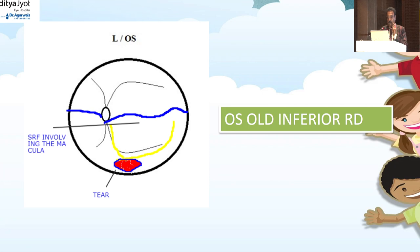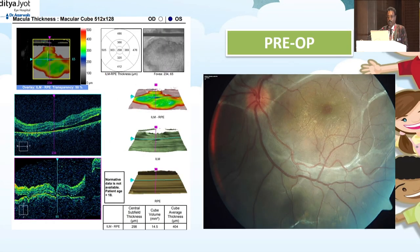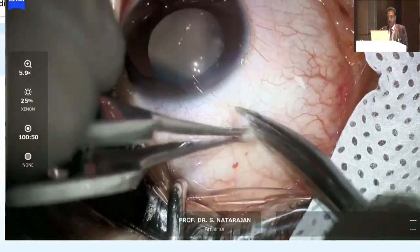Cricket ball injuries — rubber or regular — bounce and hit the lower part of the eye; the Bell phenomenon causes the eye to go up, producing a tear at six o'clock. Children often do not give history because they are afraid or have forgotten. OCT shows subretinal fluid nearing the macula; a similar scleral buckling procedure was performed. Post-operatively the retina was totally attached.